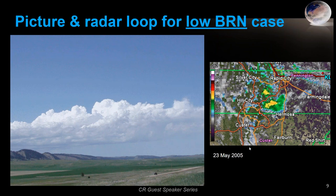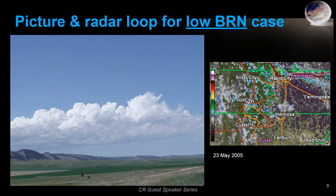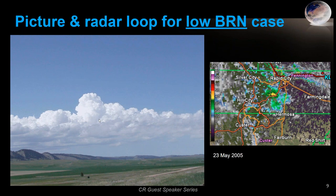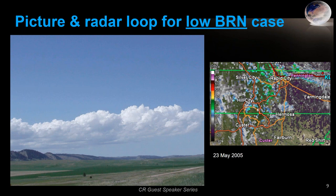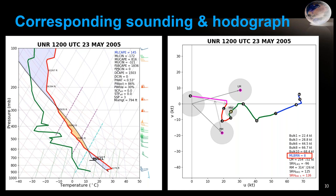Now looking at a case where we had a low bulk Richardson number — along the eastern Black Hills — we see very shear-dominated convection. It showed 50 dBZ for just a scan or two and otherwise just could not sustain itself. The ML CAPE was just 145, using a modified 12Z sounding for afternoon conditions. The BRN was quite low at 8. Still had plenty of zero-to-six bulk wind difference of 44 to 45 knots — similar shear to the last example, but much less buoyancy.